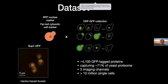Let me introduce the dataset we used. We obtained it by crossing RFP nuclear marking and a far-red cytosolic cell marker to the open reading frame GFP collection — a large-scale collection containing over 4,000 GFP-tagged proteins, capturing as much as 71% of the yeast proteome. The dataset, imaged by Harsha, a post-doc in our lab, contains three imaging channels and over 10 million single cells — comparable in scale to ImageNet.